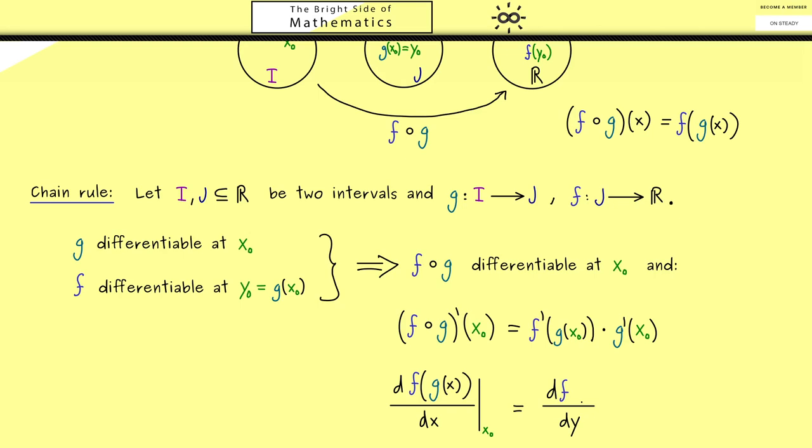In the same way we can do this on the right hand side where we introduce the variable y for the function f. And there the given point we should specify is g(x₀). And then the only thing that remains is times dg/dx at the point x₀.